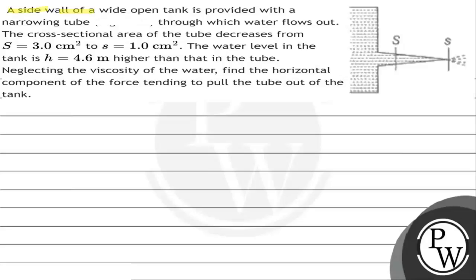The question states that a side wall of a wide open tank is provided with a narrow tube through which water flows out. The cross-section area of the tube decreases from 3 cm² to 1 cm². The water level in the tank is 4.6 meters higher than that in the tube. Neglecting viscosity, find the horizontal component of the force tending to pull the tube out of the tank.